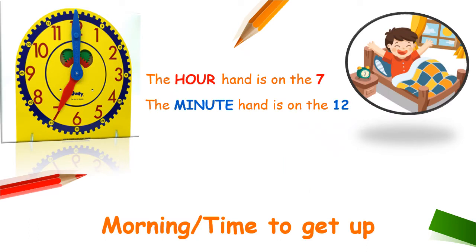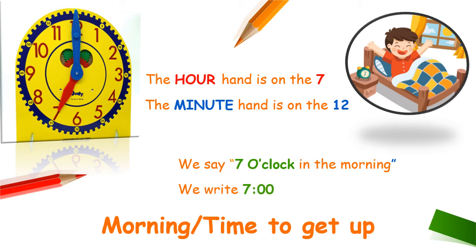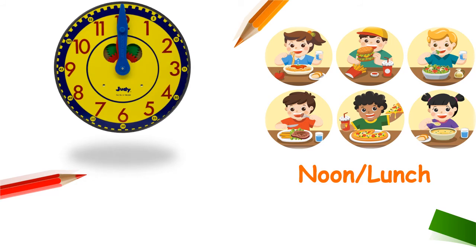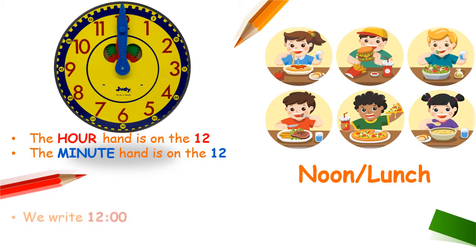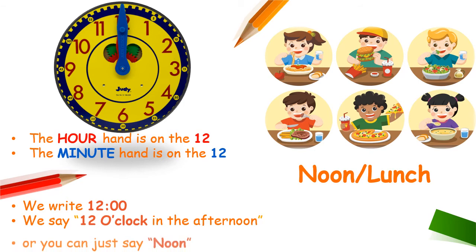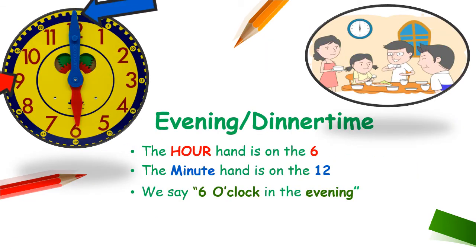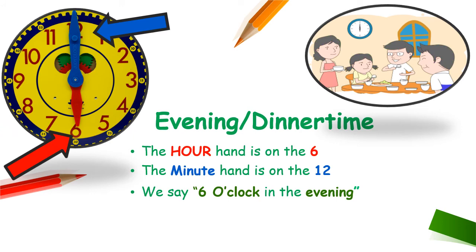Let's try telling some time. Most people get up and start their day in the morning — this is what the clock might look like. The hour hand is on the 7 and the minute hand is on the 12, so we would say it is 7 o'clock in the morning. This is what the clock might look like when you're eating lunch at school — both hands are on the 12, so we write and say 12 o'clock in the afternoon, or you can simply say noon. This is what the clock might look like at dinner time — the hour hand is on the 6 and the minute hand is on the 12, so we say it is 6 o'clock in the evening.